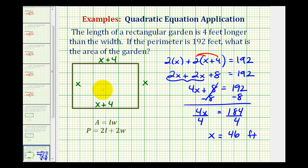So going back over to our sketch, if this is 46 feet, 46 plus 4 is equal to 50. So this would be 50 feet.